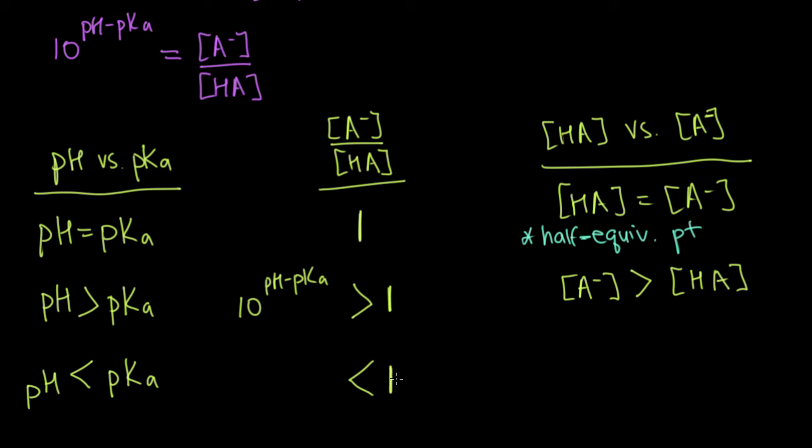So that tells us that our denominator, HA, is actually bigger than our numerator.